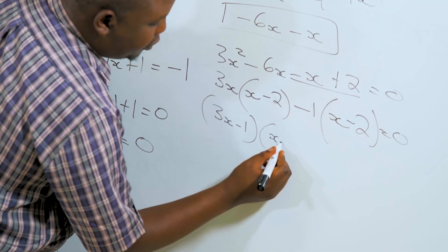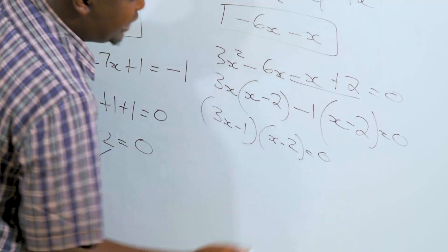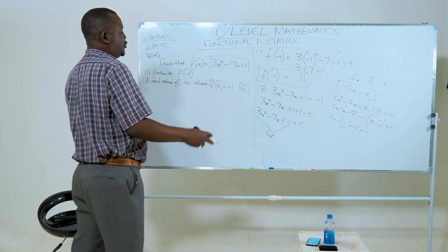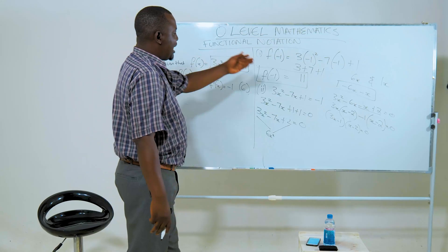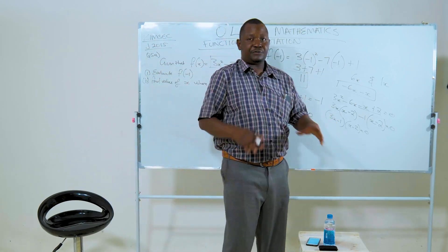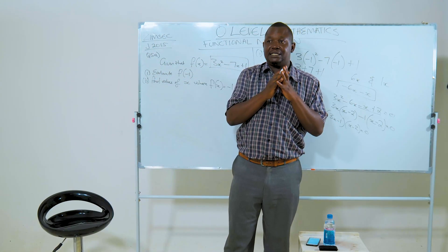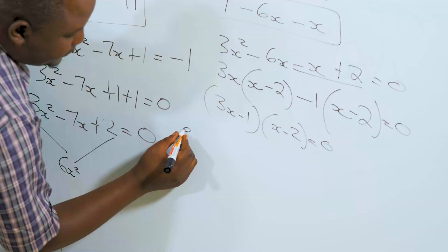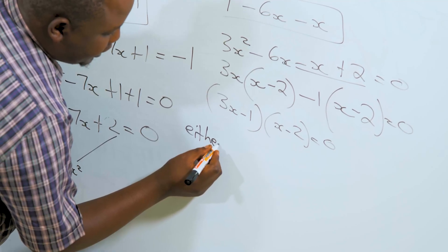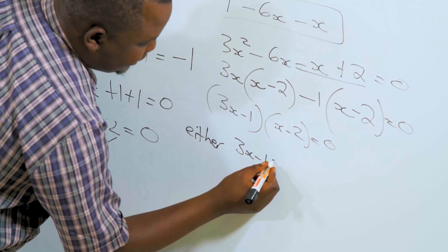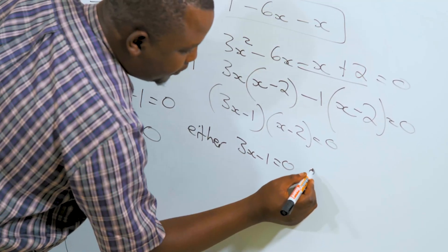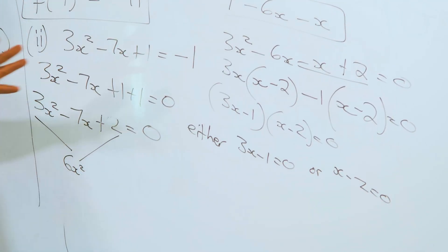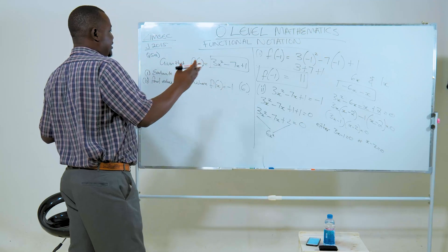We now have a situation where two numbers are multiplying to give zero. If two numbers multiply to give zero, it means one of the numbers is zero. So it is either 3x minus 1 equals zero, or x minus 2 equals zero. We then solve these two equations separately.